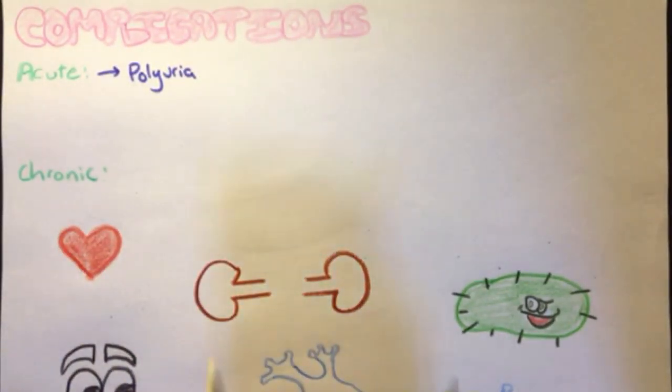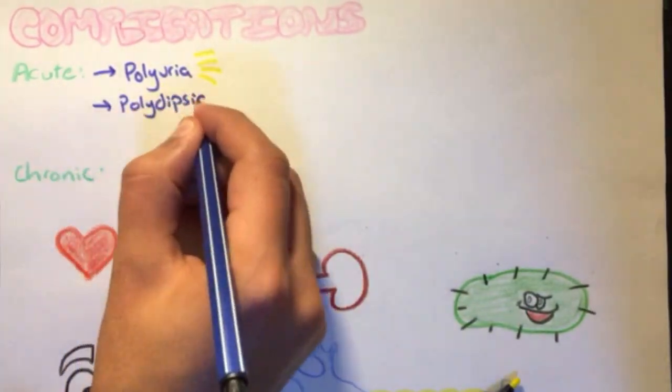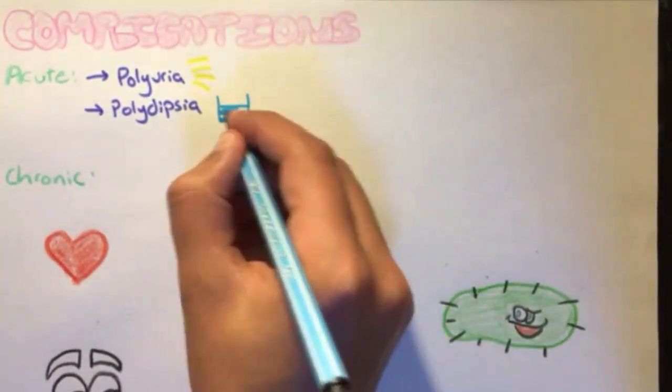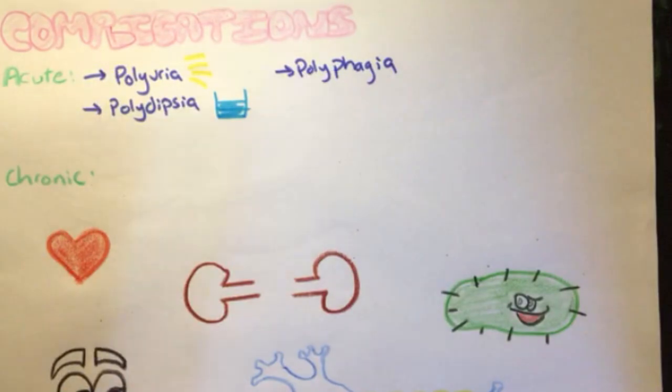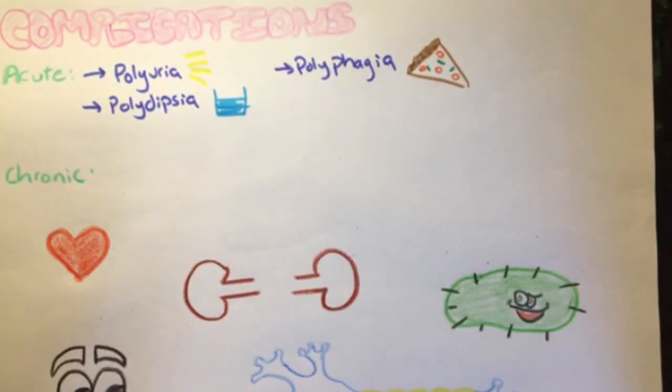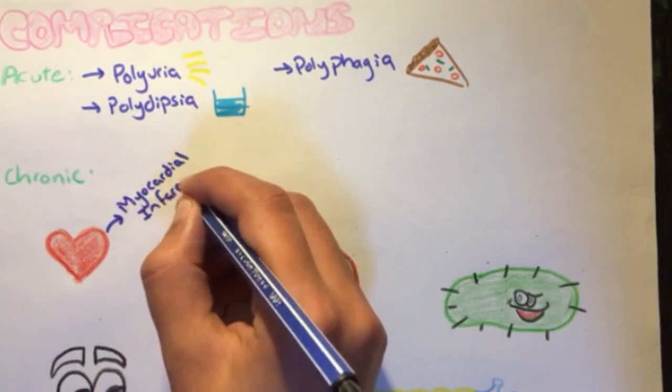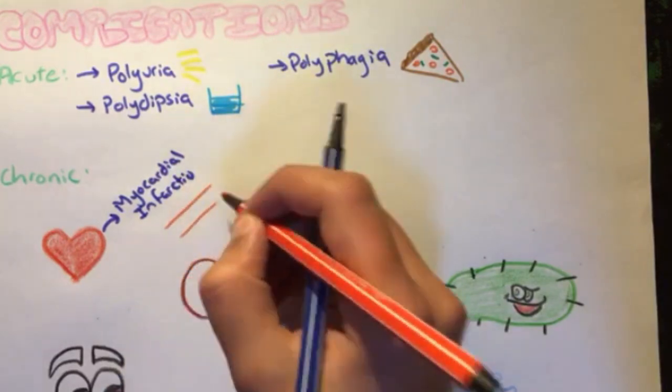polydipsia, which is excessive thirst, and polyphagia, which is excessive eating. As for long-standing diabetes, which is left untreated, many problems may take place. First of all, on the cardiovascular system, myocardial infarction can occur due to the accelerated rate of atherosclerosis.